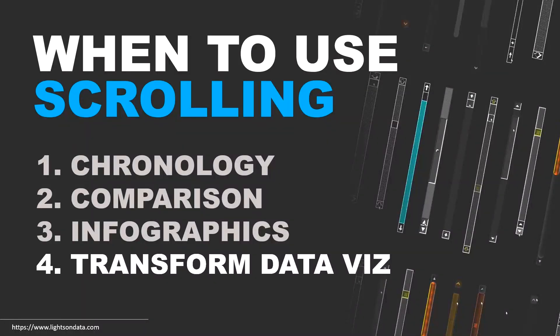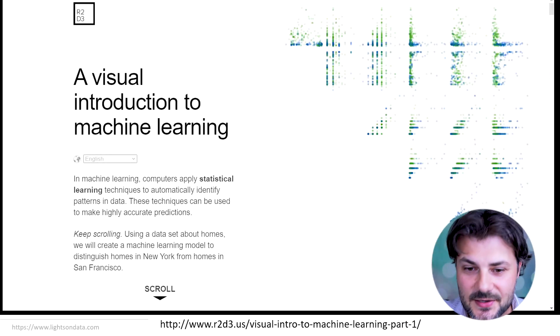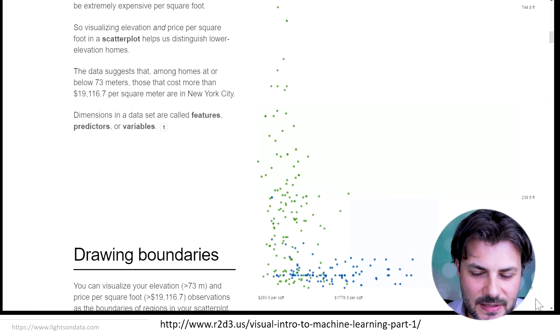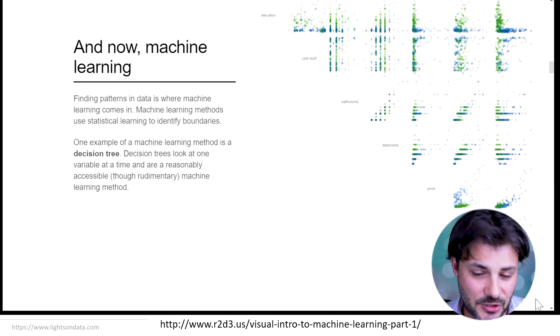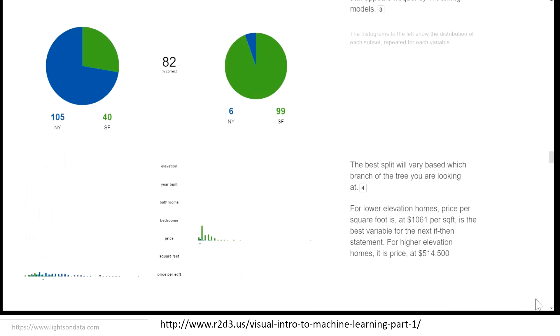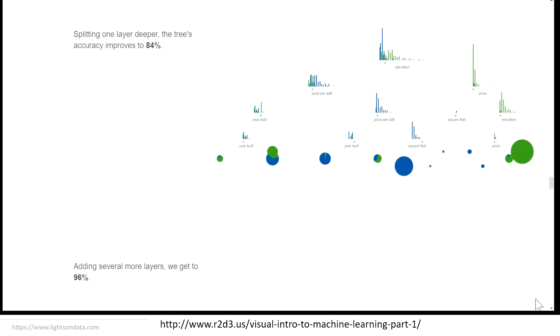Lastly, scrollytelling is great for when you want to continuously transform data visualizations as scrolling is performed. A great example is this visual introduction to machine learning. By controlling the scrolling, the audience decides the pace at which the story unfolds, which results in enhanced user engagement. Scrollytelling is a good way to keep your audience engaged and sometimes even immersed in the data story. The scroll gives them a sense of control, exploration, and discoverability.